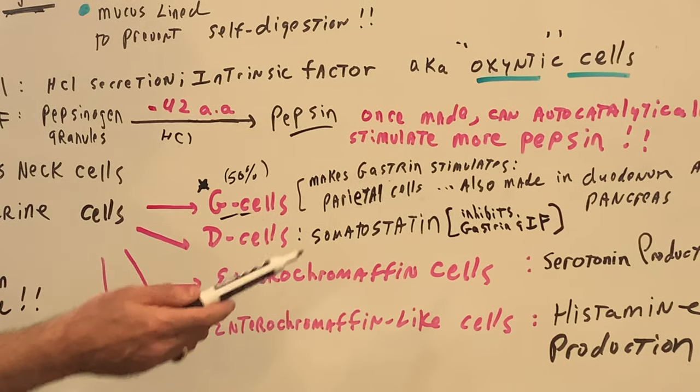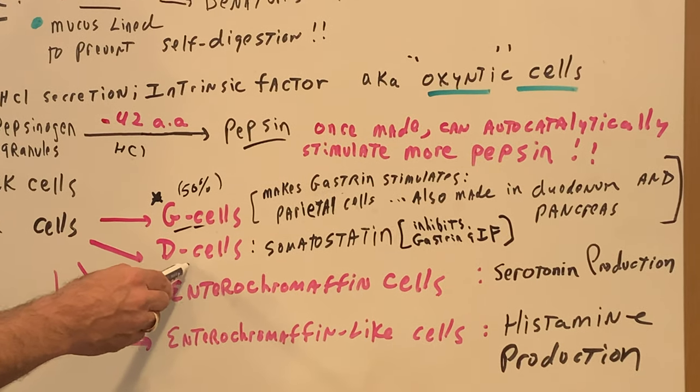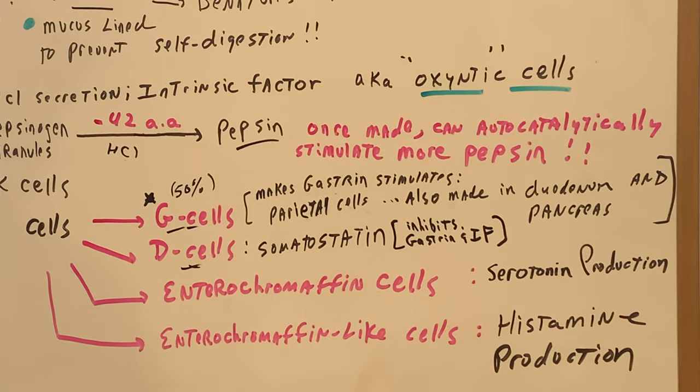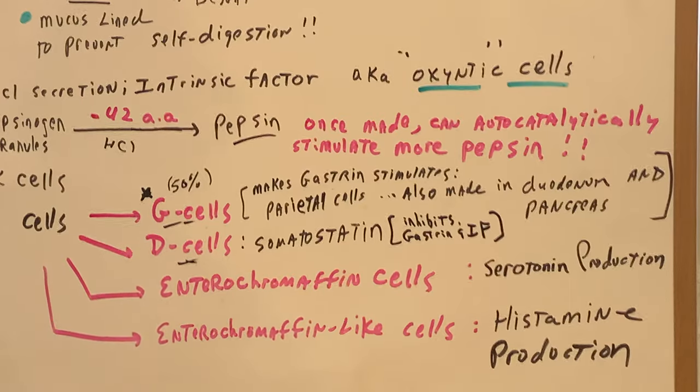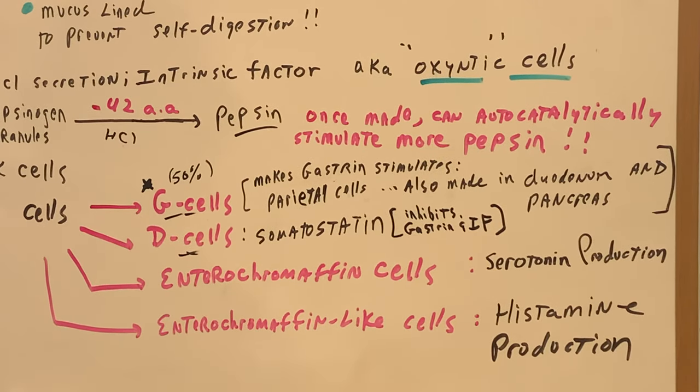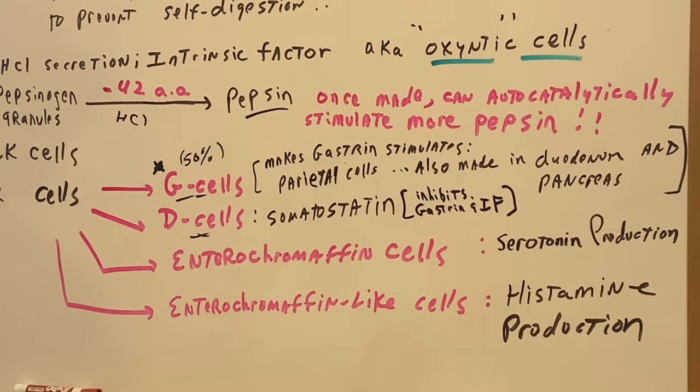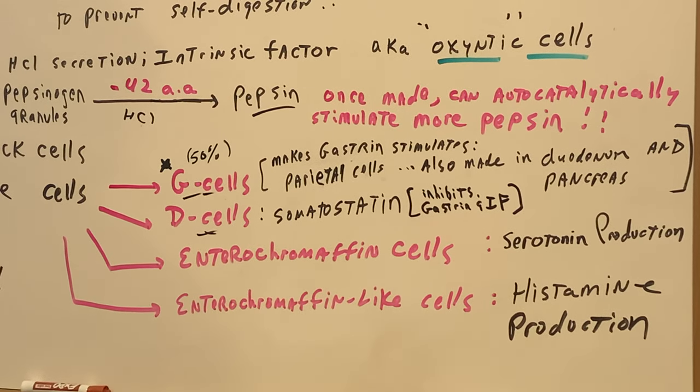D cells we came across if you remember in the pancreas. Here they're also present in the stomach and they're involved in making somatostatin which inhibits the gastric and the inhibition of intrinsic factor.